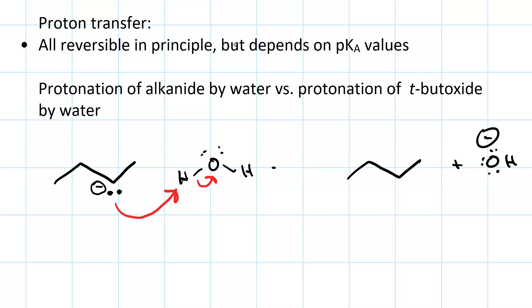Now, should we draw reversible reaction arrows since it's proton transfer, or should we look at pKa values? Water has a pKa of 15.7. An alkane has a pKa of 50. That's a difference greater than 6. This reaction is effectively irreversible.